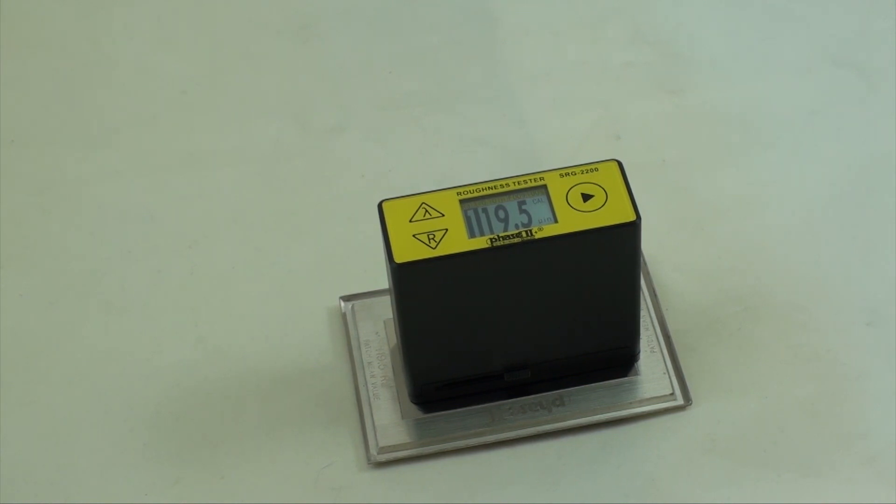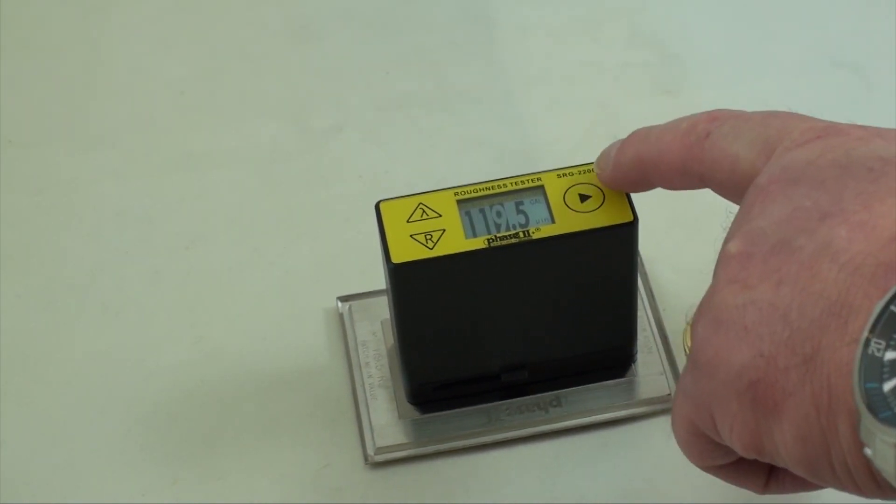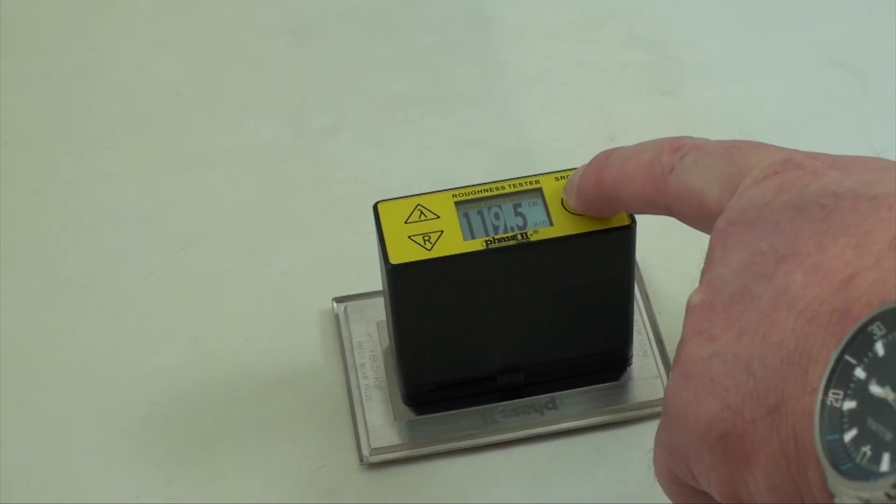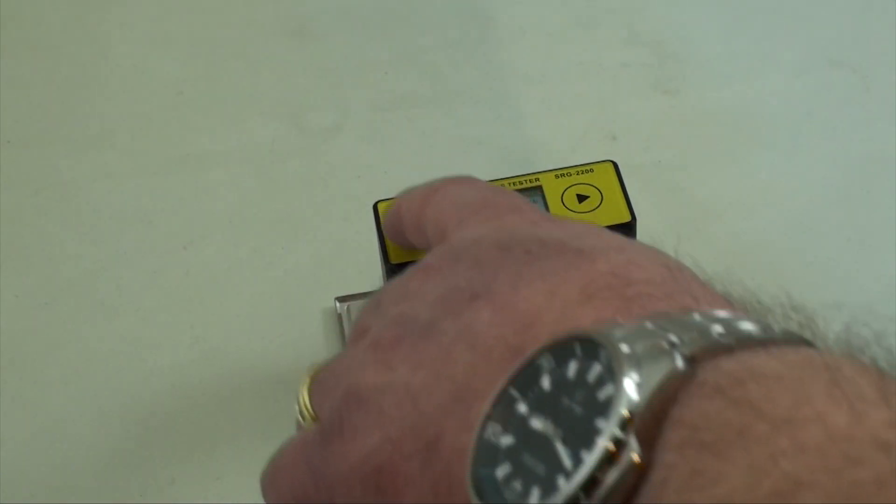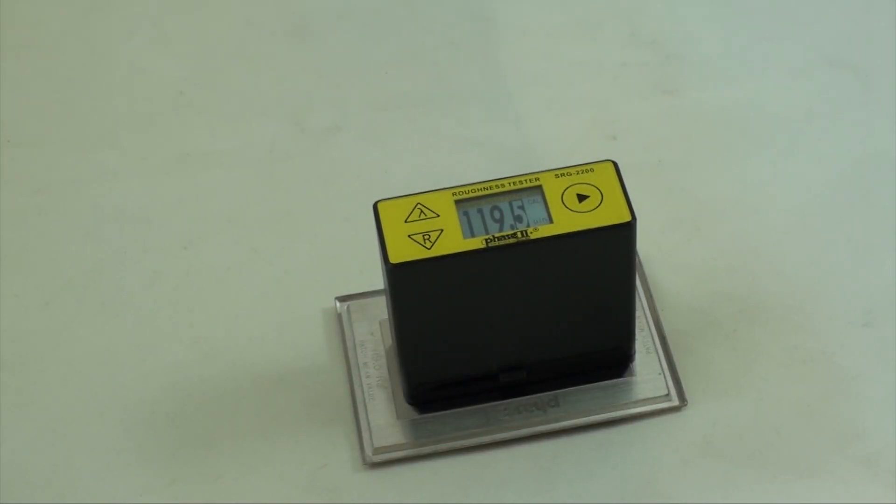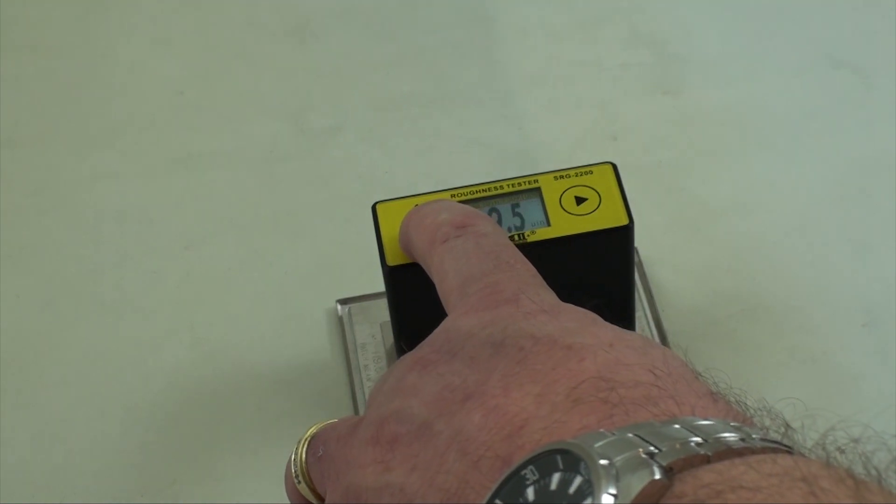Press the right arrow button to toggle to the column to be changed and use the up and down arrow buttons to make changes directly. Once the correct value is entered, press and hold the R button for at least four seconds to save the calibration.